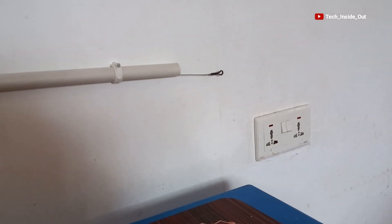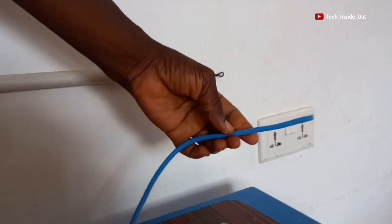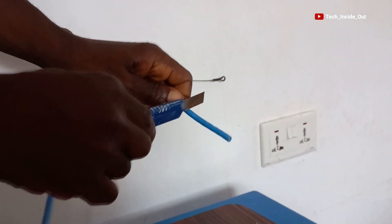Now that it has appeared at the other side, I would have to tie the cable we wish to run to the fishing tape, so I will peel off the insulation around the CAT6 cable.